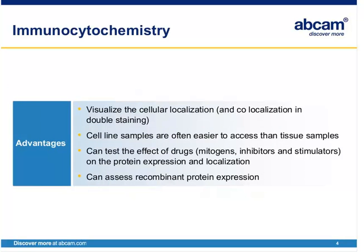So what's the main advantage of immunocytochemistry? The main advantage is that you can visualize the precise cellular localization of your target, and even co-localization if you're doing double staining or multiple target staining. Cell line samples are often easier to access than tissue samples. You can also test the effects of drugs such as mitogens, inhibitors and stimulators on protein expression and localization in cell culture, and you can assess recombinant protein expression and localization.